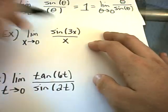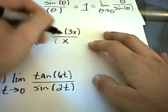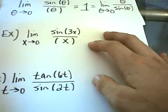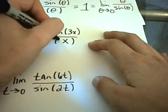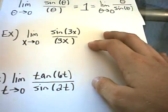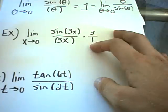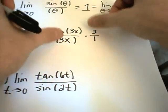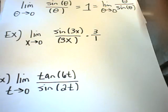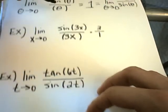Well, in this case, I have 3x on top. Well, I would like to have a 3x in the bottom. Well, let's just make that happen. I'll multiply the denominator by 3. But if I multiply the denominator by 3, I also have to multiply the numerator by 3. Okay, so there's my extra 3. Again, notice I could just cancel those out and be back to my original problem.